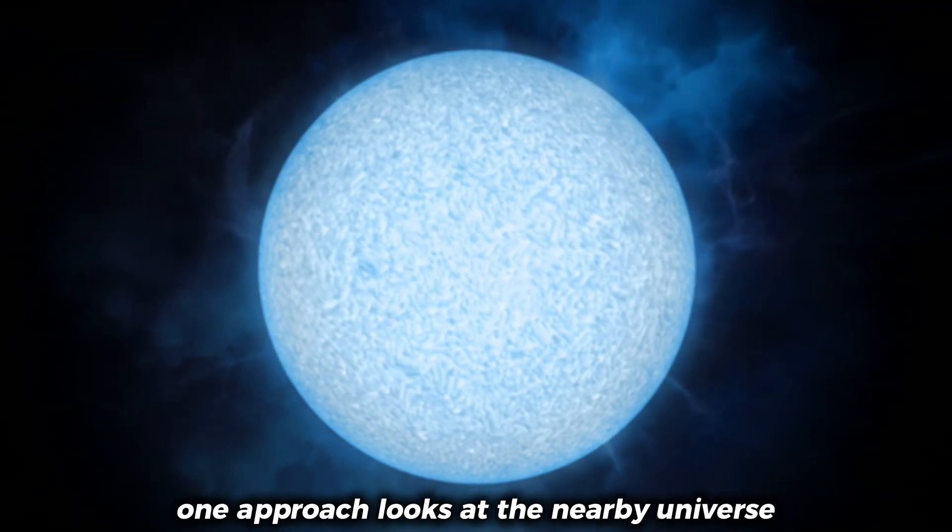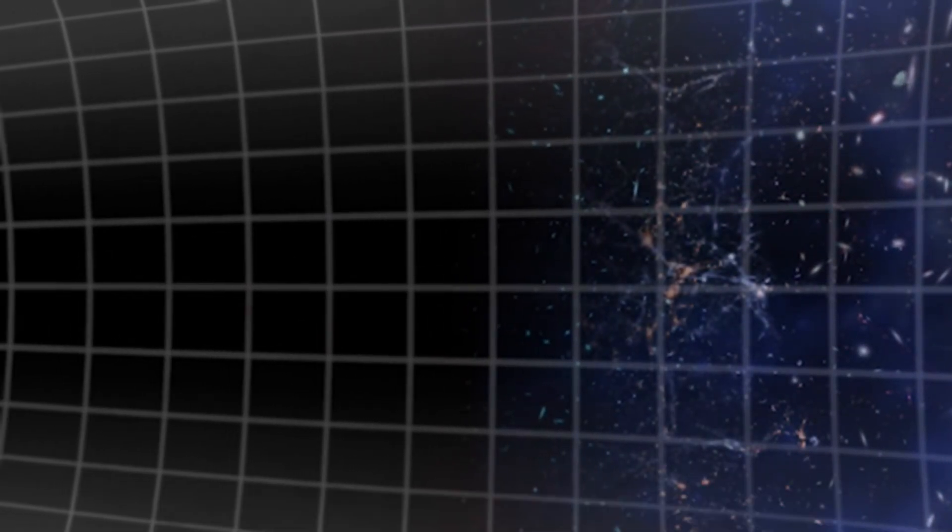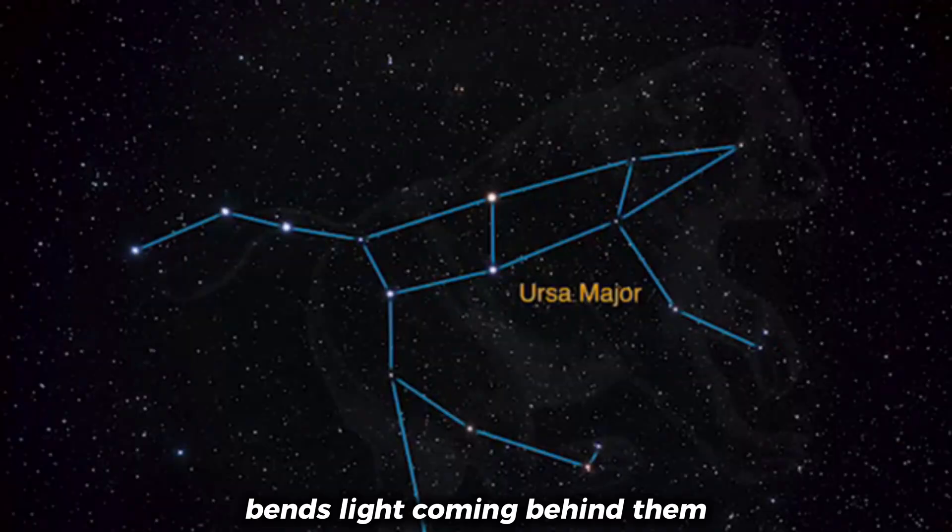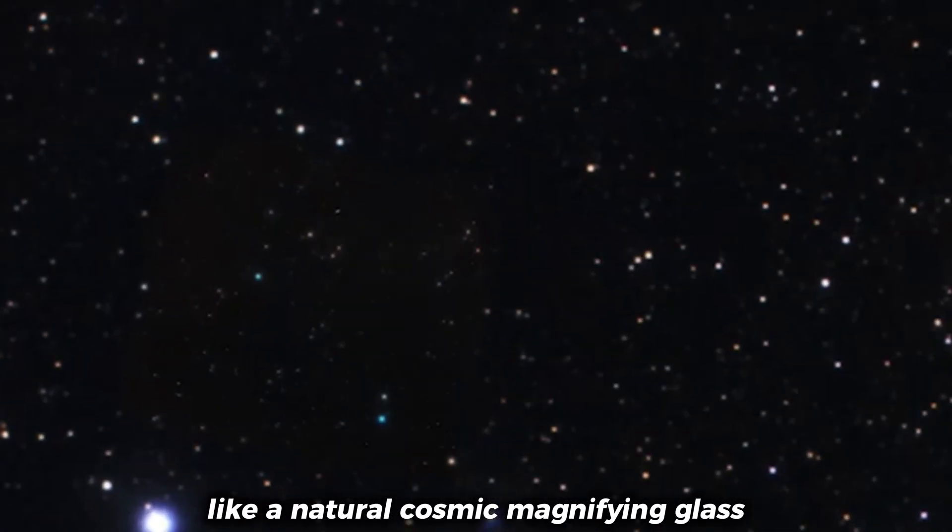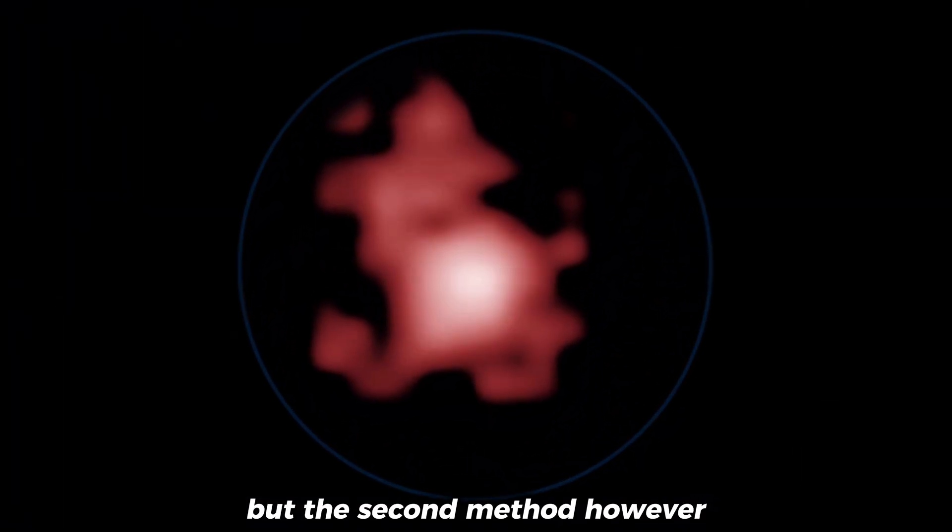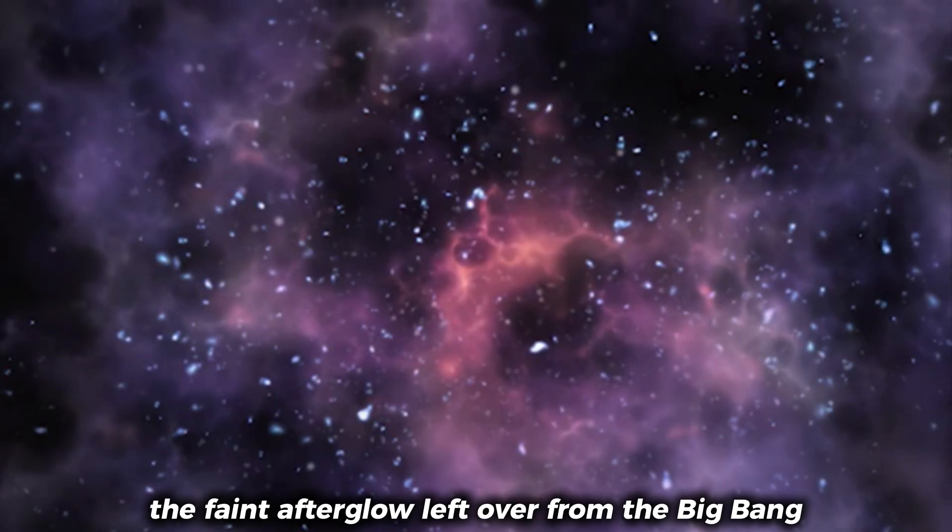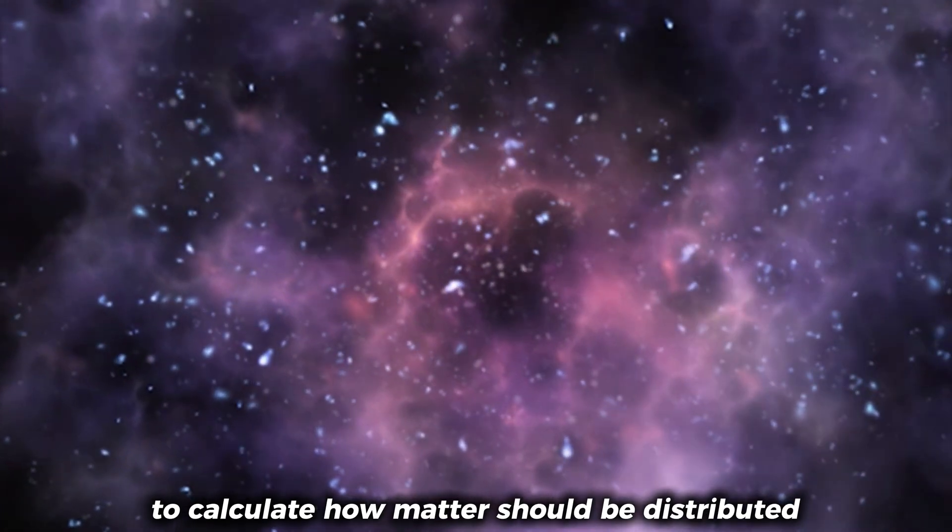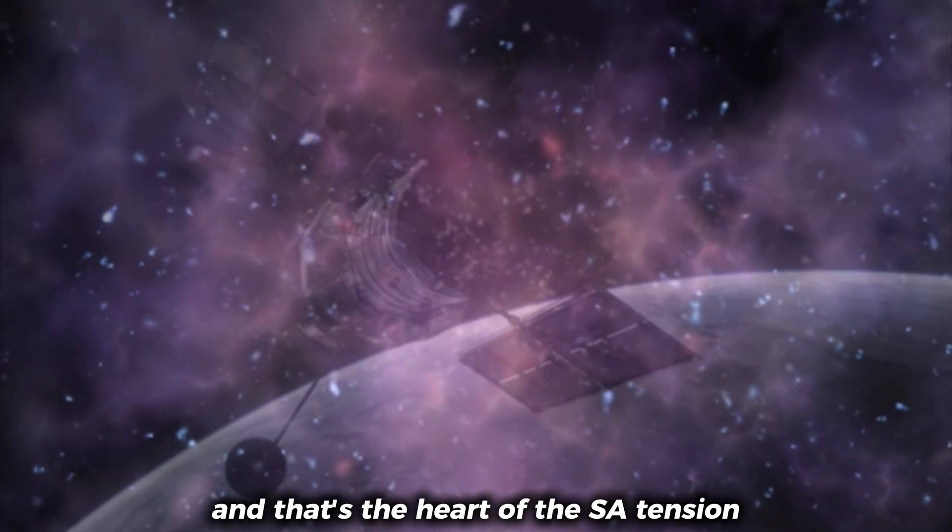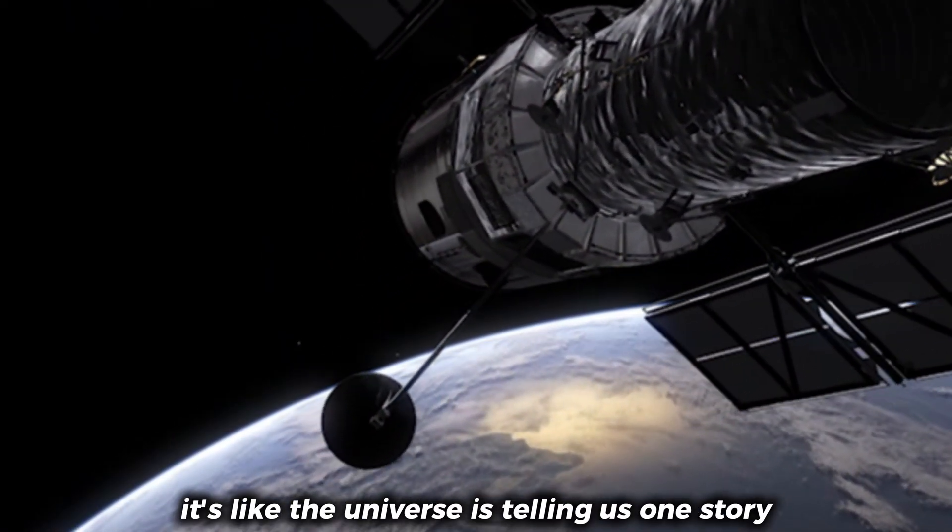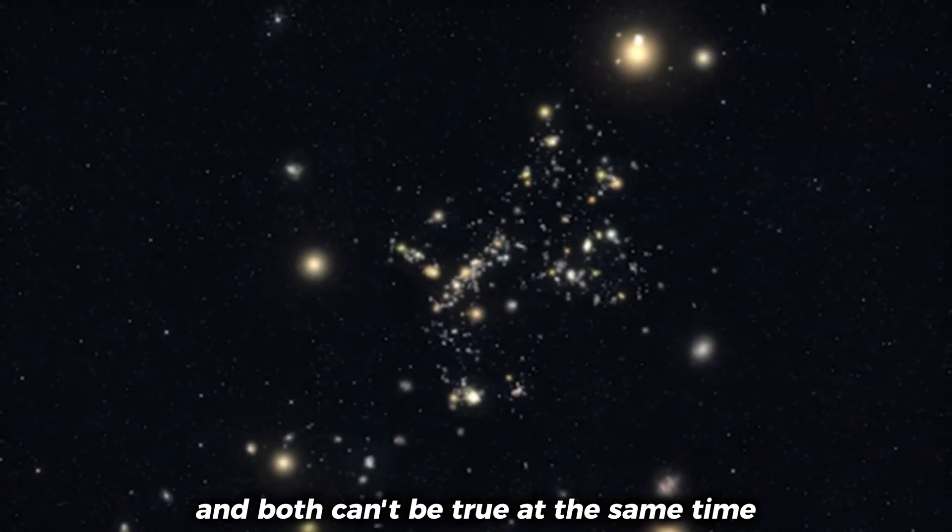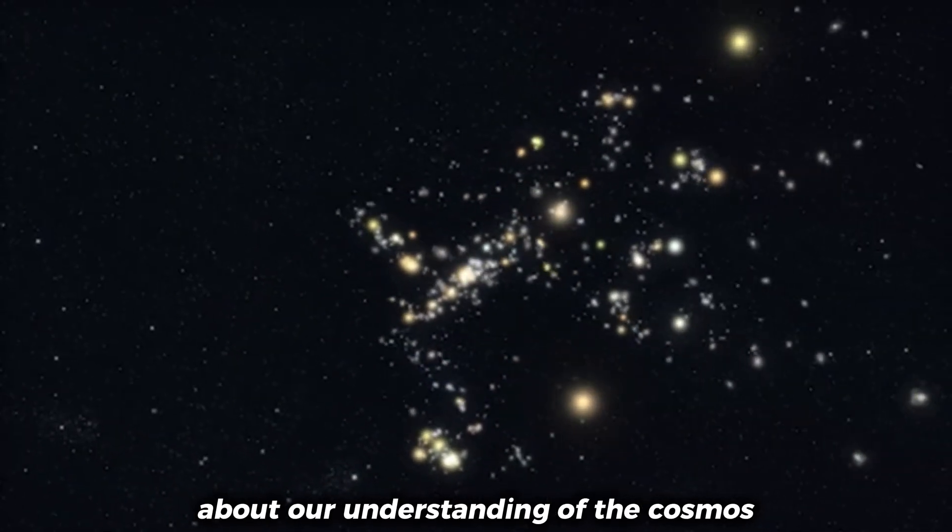Scientists use two main ways to figure this out. One approach looks at the nearby universe using something called weak gravitational lensing. It's this beautiful phenomenon where the gravity of huge objects, galaxies, clusters, or even black holes, bends light coming from behind them like a natural cosmic magnifying glass. By studying these distortions, astronomers can map how matter is arranged. But the second method uses the cosmic microwave background, the faint afterglow left over from the Big Bang, to calculate how matter should be distributed according to our standard model of cosmology. The problem? These two measurements don't match. And that's the heart of the S8 tension. It's like the universe is telling us one story through the CMB and another through gravitational lensing, and both can't be true at the same time. Clearly, something fundamental about our understanding of the cosmos isn't adding up.